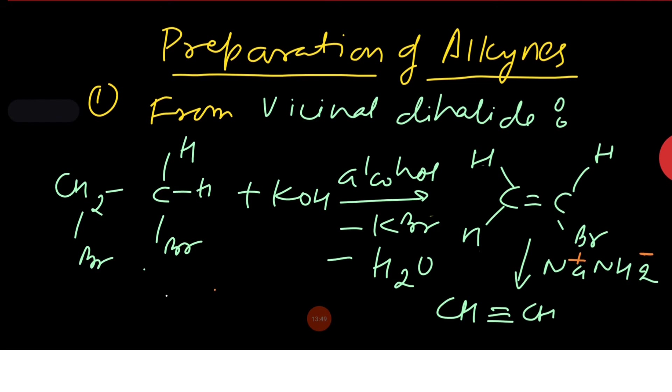then calcium hydroxide and ethyne or acetylene is formed. Next preparation is from vicinal dihalide. When vicinal dihalides are treated with alcoholic solution of KOH,